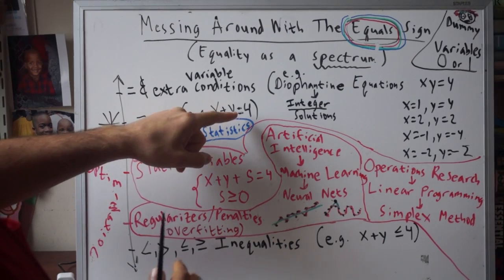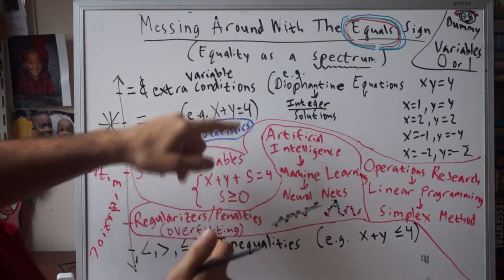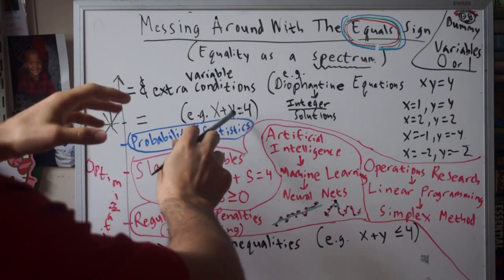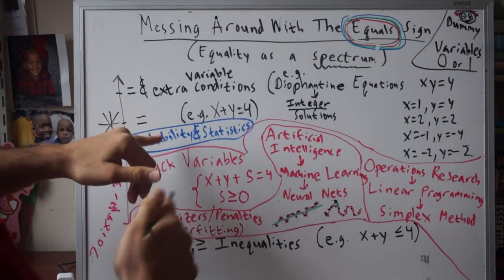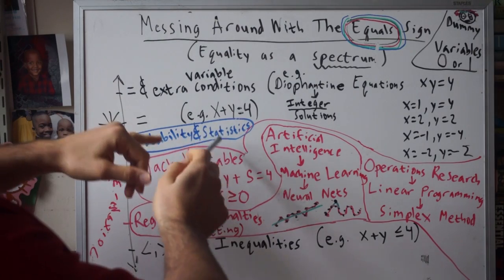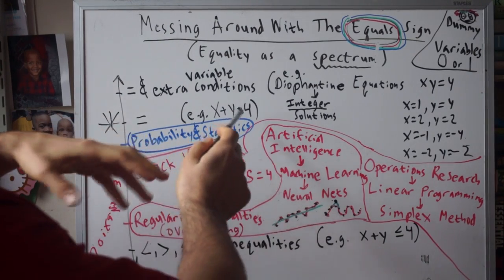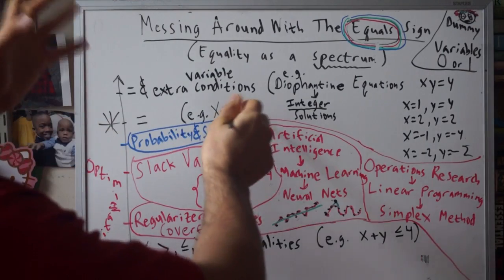Well, that's probability. Let's say we want x plus y to equal 4 at least 80% of the time. That's probability, and we can discuss statistics as well. What's the likelihood that if we do something that will be true?